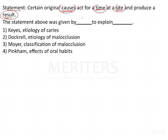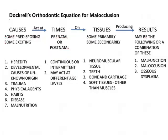Looking at all of the options — caries, malocclusion, habits — all of these seem appropriate because caries or malocclusion all occur because there is some cause acting for a particular duration of time on some site, producing a result. The result may be caries, malocclusion, or the effect of a habit. But this statement was actually given by Dockrell to explain the etiology of malocclusion. This is Dockrell's orthodontic equation for malocclusion, which explains how malocclusions occur.